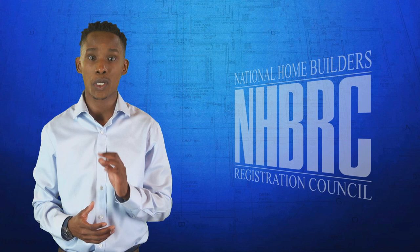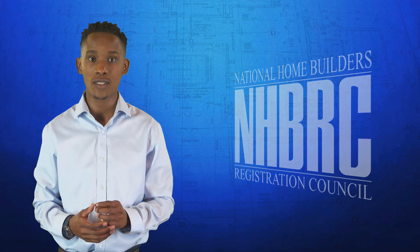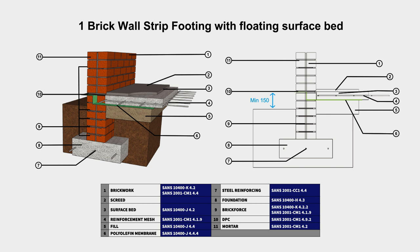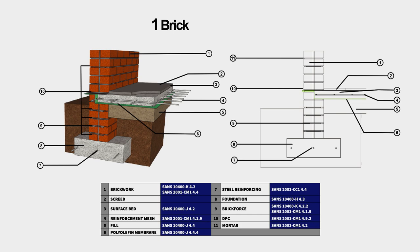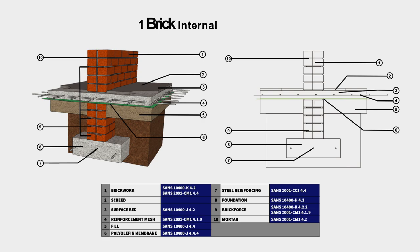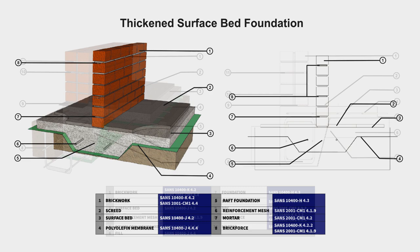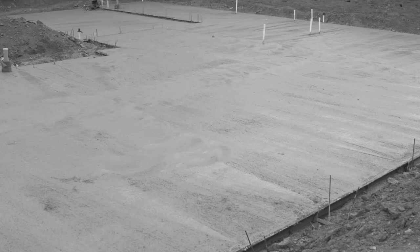Different types of soils and buildings require different foundations. Here are some examples of different types of foundations, all in accordance with SANS 10400 Part H: one brick wall strip footing with floating surface bed, one brick wall strip footing, half brick internal foundation, one brick internal foundation, one and a half brick wall foundation, cavity wall foundation, thickened surface bed foundation, raft foundation, internal raft foundation, and reinforced ground beam foundation on concrete piles.